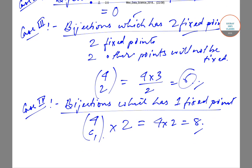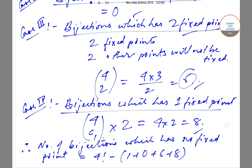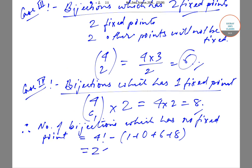These are the total number of bijections which have fixed points. We subtract this from the total number of bijective functions to get bijections with no fixed points. Therefore, the number of bijections with no fixed point = 4! − (1 + 0 + 6 + 8) = 24 − 15 = 9. So 9 is the answer for this particular question.